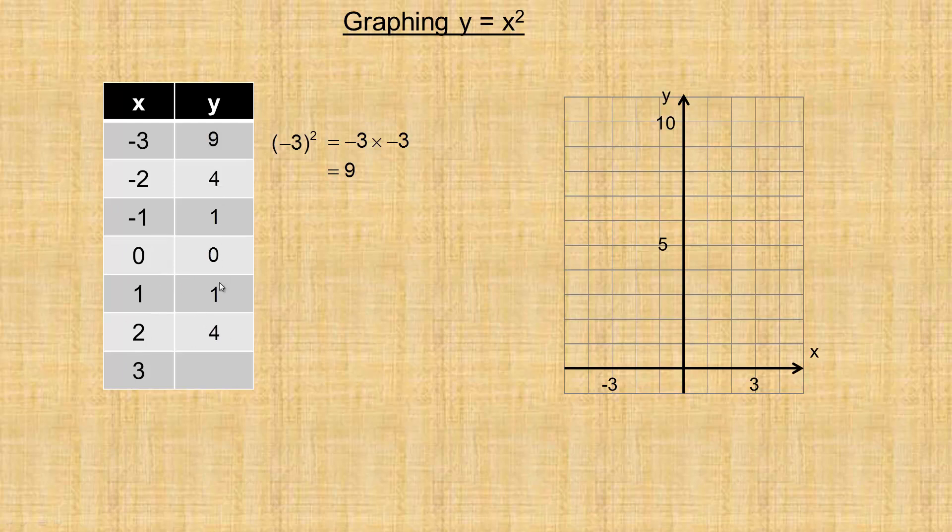And notice we're actually duplicating the numbers. That's the same 1 as that, the same 4 as that. So 3 squared is 9, same y value we got up here.